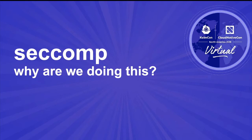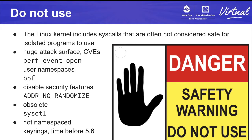What's the point of all this? What are we actually trying to achieve? There are some system calls in Linux which are not really considered safe for isolated programs to use. Some have a very large attack surface and there have been a lot of CVEs around them — perf_event_open is one, user namespaces, BPF. These are just very large subsystems that most containers don't actually need to use. There have been a lot of CVEs where you could escape from a container if you could access these syscalls, so blocking them has proven to be useful.